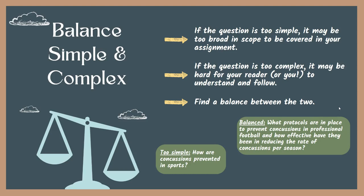As an example, a simple yet overly broad question could be: how are concussions prevented in sports? What sport are you going to talk about? What kind of prevention method? What if you compared how they are prevented in college versus professional football, then looked at reduction rates over the past 10 seasons, and tried to draw a correlation with how effective the prevention protocols are? That is a lot of questions to consider. So let's find a balance: what protocols are in place to prevent concussions in professional football, and how effective have they been in reducing the rate of concussions per season? That's balanced.